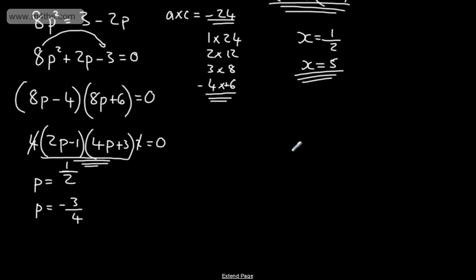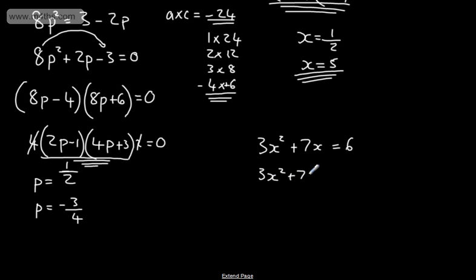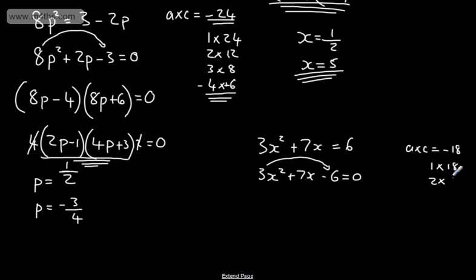Fairly logical, slightly harder than before, but we're just looking at the technique. Let's do 3X squared plus 7X equals 6, so rearranging: 3X squared plus 7X minus 6 equals 0. A times C gives me negative 18. Listing factor pairs: 1 times 18, 2 times 9, 3 times 6 — and since the product is negative, one will be negative and one positive. So the numbers are negative 2 and positive 9, since those multiply to negative 18 and add to 7.